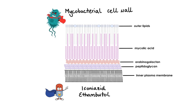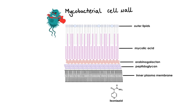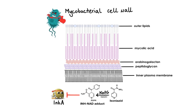Isoniazid is a prodrug which, upon entering the cell, must first be activated by the bacterially catalyzed peroxidase enzyme KatG. Once activated in the presence of NADH, isoniazid forms an adduct that binds to and inhibits enoyl-acyl carrier protein reductase, abbreviated InhA. InhA is a member of the type 2 fatty acid synthesis system, which elongates long-chain fatty acids for the synthesis of mycolic acid. Inhibition of mycolic acid synthesis leads to a loss of cell wall structural integrity and physiologic function, ultimately resulting in bacterial cell death.